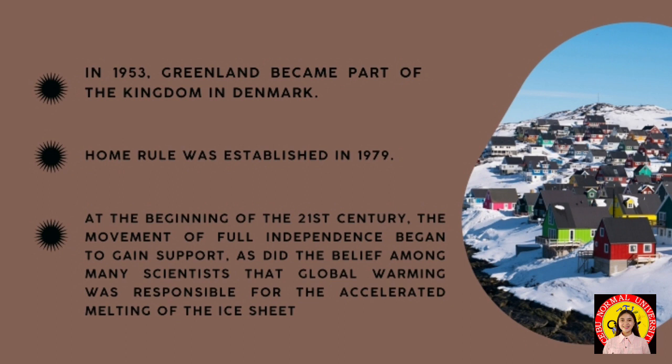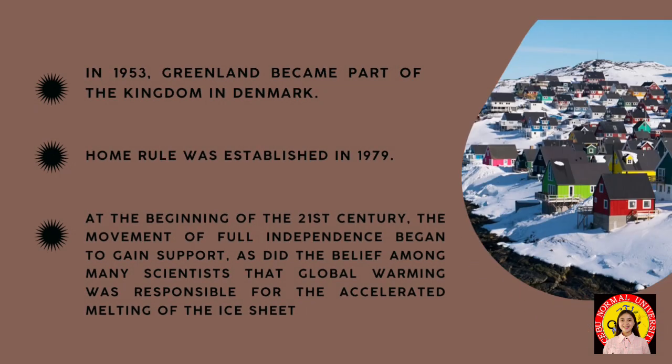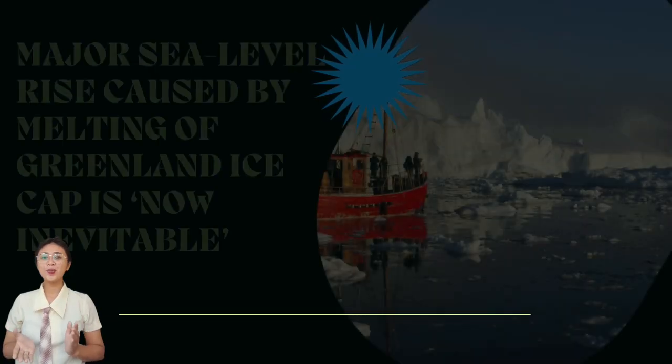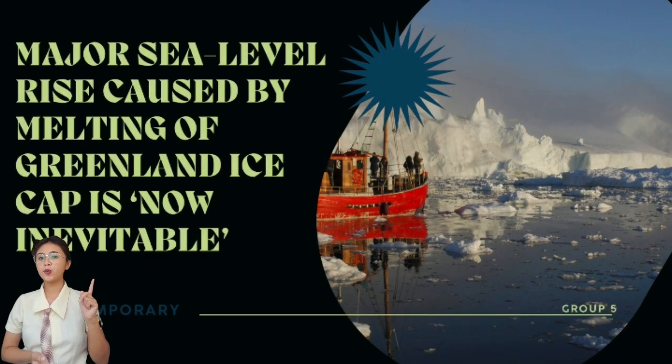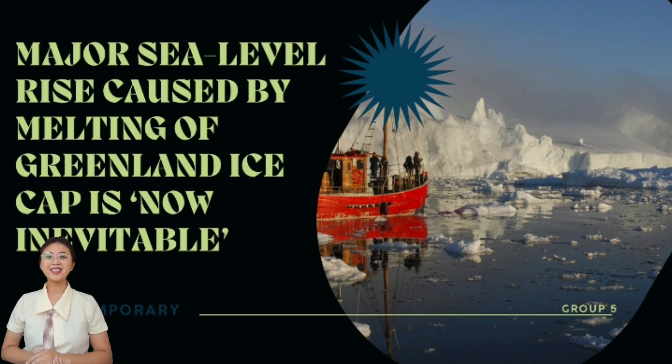In the late 20th and early 21st centuries, scientists cited that global warming was profoundly affecting not only Greenland's climate but also its physical geography. A number of scientists noted that Greenland's ice sheet was shrinking at a highly increased rate. We now have Teacher Carmina to talk about the article: 'Major sea level rise caused by melting of Greenland ice cap is now inevitable.'